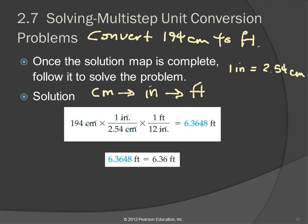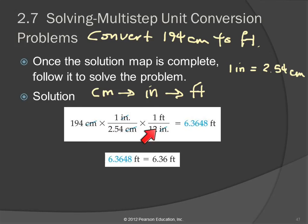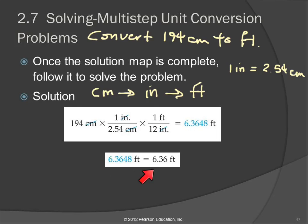Then we're going to look at our significant figures and round our answer. 194 has 3 significant figures. The 2.54 conversion is one of those unusual conversion factors that is an exact number between the metric and English system, so we don't have to think about that one. 12 inches and 1 foot — that's exact. We don't have to think about that either. So because our initial number had 3, our answer will have 3: 6.36 — the next digit is a 4, so we round down to 6.36 feet.